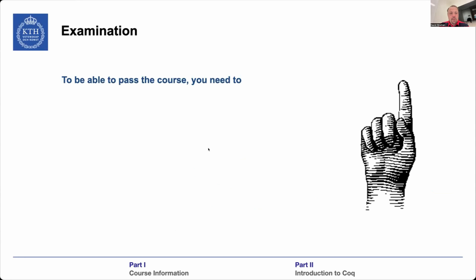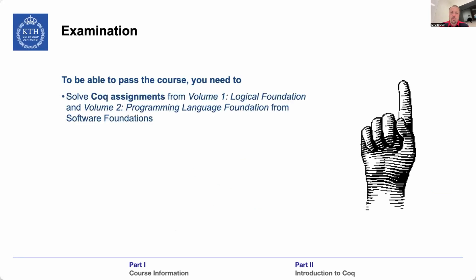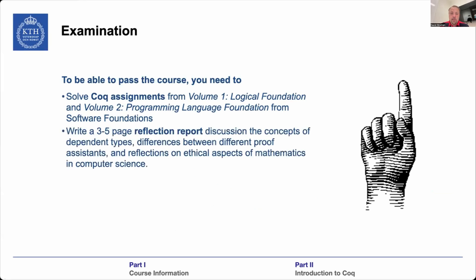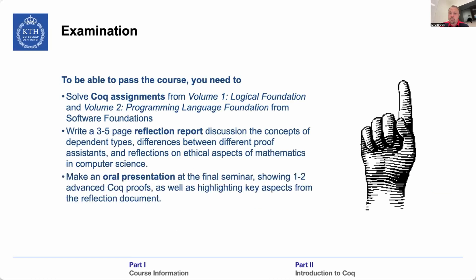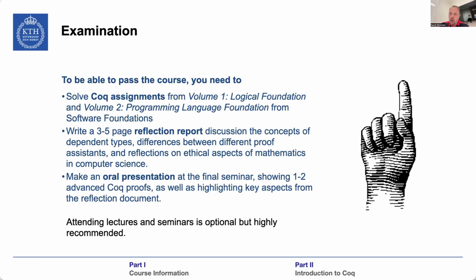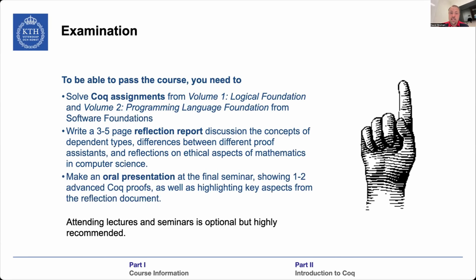For examination, there are basically three parts to pass the course: complete all the exercises in Volume 1 and Volume 2 as described — this is the main bulk of the workload; write the reflective report; and give an oral presentation at the final seminar. If you're taking the course for credits, you must submit the work and give a presentation. Attending lectures and seminars is optional but highly recommended. We are recording everything so you can view it afterwards, but attending live allows you to interact, ask questions, and engage directly.